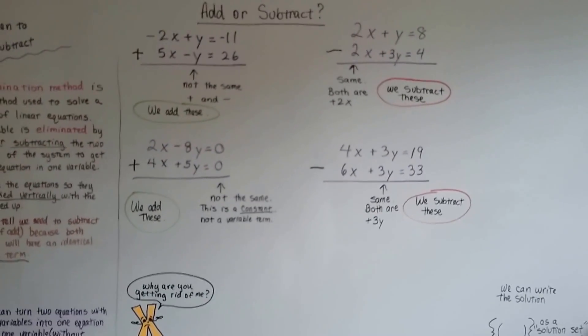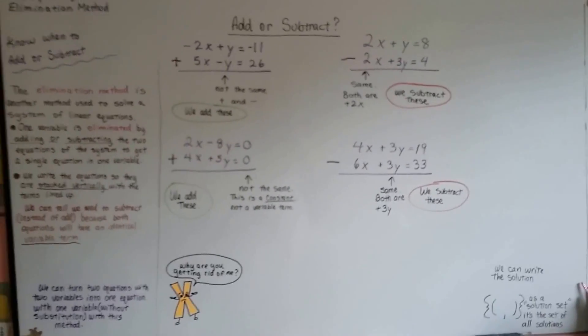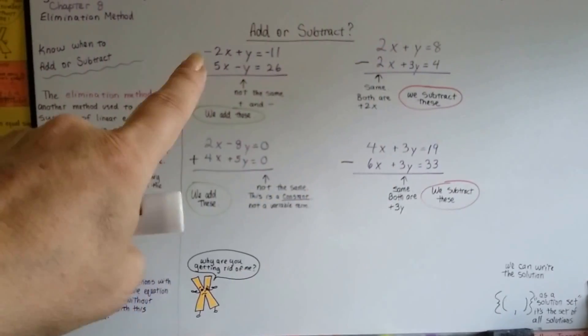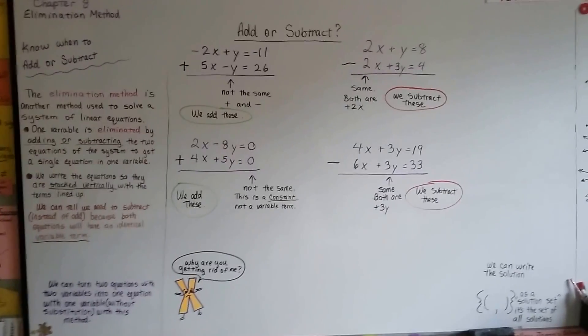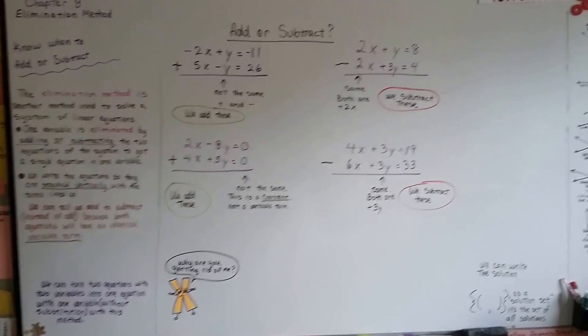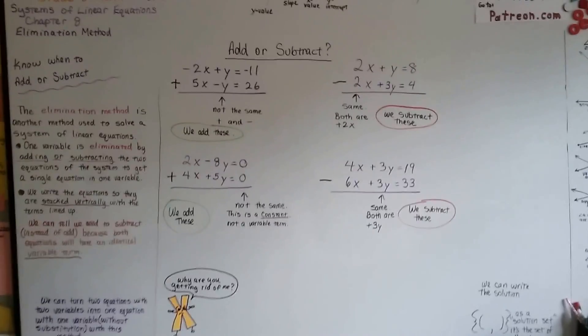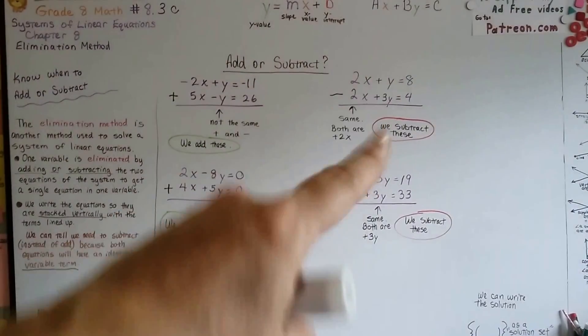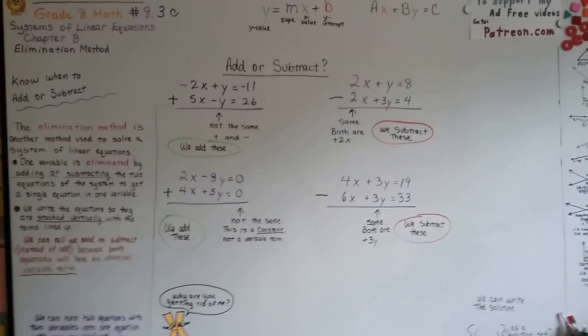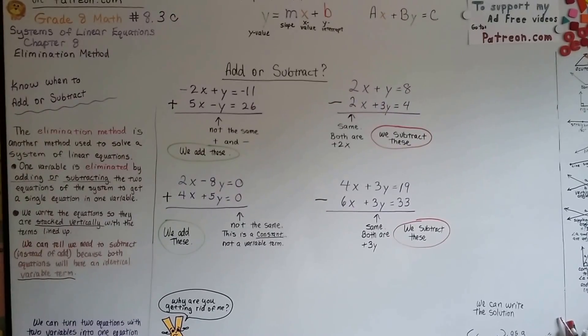A lot of your tests are going to have the addition or subtraction sign already there for you, but this is helpful when you're doing a word problem and you're trying to write the equations yourself and you're trying to figure out whether to add or subtract. We're going to move on to 8.3d, and we're going to actually do some subtraction and graph them to check our answer. I'll see you there. Bye.